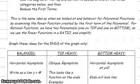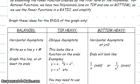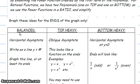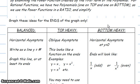If the graph is balanced, the degree of the numerator equals the degree of the denominator. Top heavy means the numerator's degree is higher than the denominator's. Bottom heavy means the denominator's degree is higher than the numerator's.